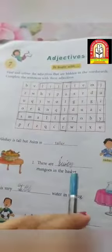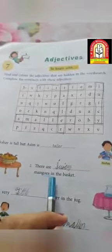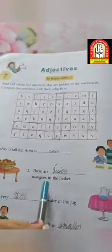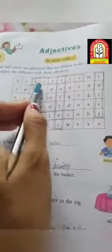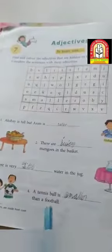There are blank mangoes in the basket. There are juicy mangoes in the basket. J U I C Y. Third is there is very blank water in the jug. There is very little water in the jug. L I double T L E little. A tennis ball is blank than a football. A tennis ball is smaller than a football. S M A double L E R smaller.